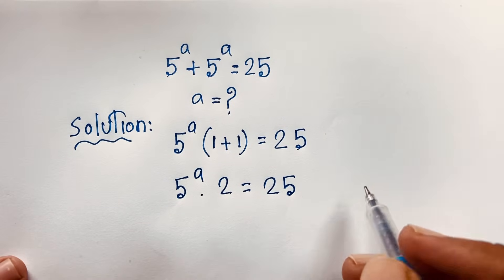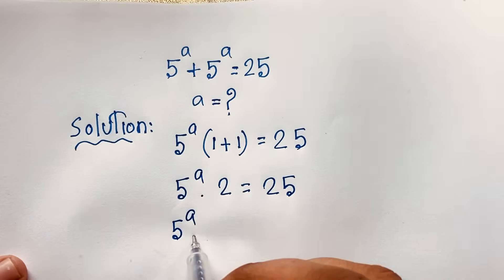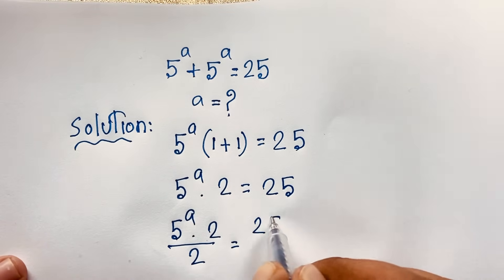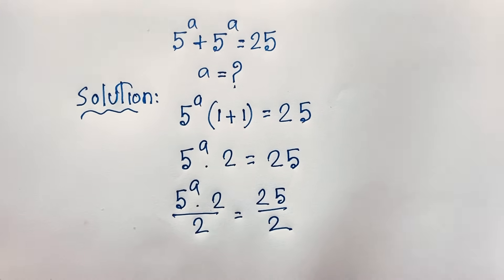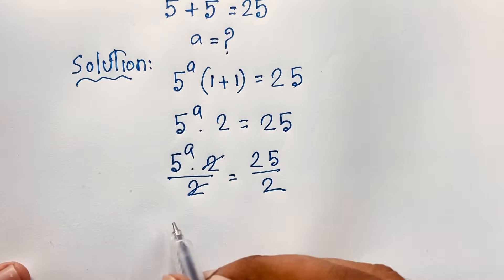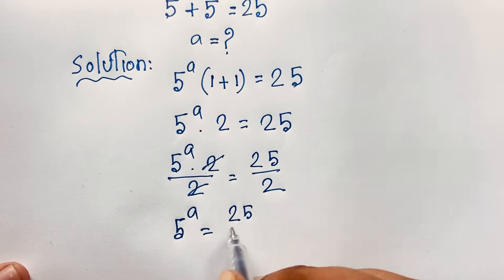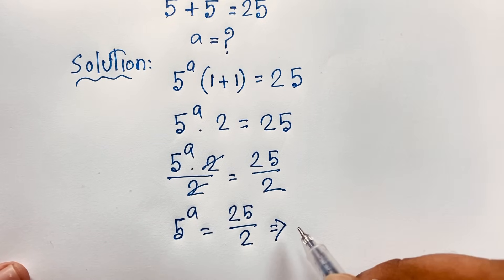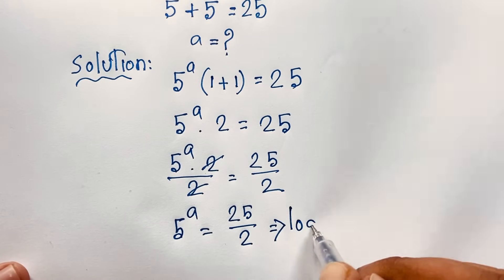Then I divide both sides by 2. So 5 to the power a times 2 over 2 is equal to 25 over 2. The 2s cancel out, and we find 5 to the power a is equal to 25 over 2.